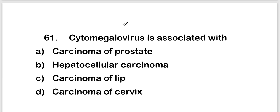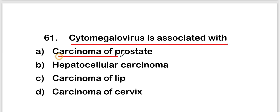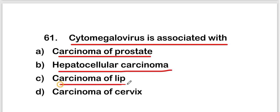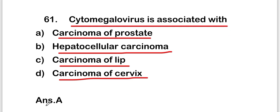Welcome to a new video on MCQs on Virology or Viruses, part 4 of this series. The first question is: cytomegalovirus is associated with carcinoma of prostate, hepatocellular carcinoma, carcinoma of lip, or carcinoma of cervix. The right answer is option A — carcinoma of prostate. Cytomegalovirus is associated with carcinoma of prostate.